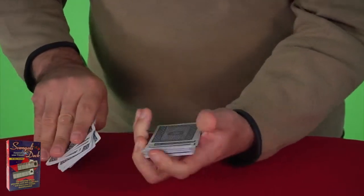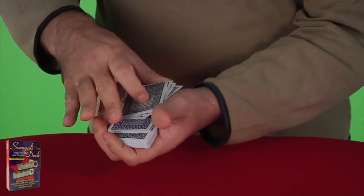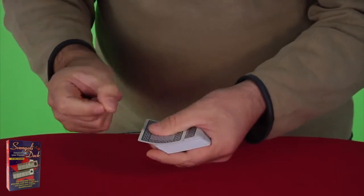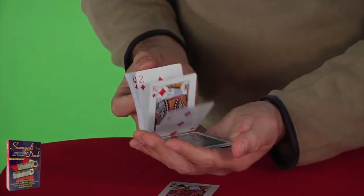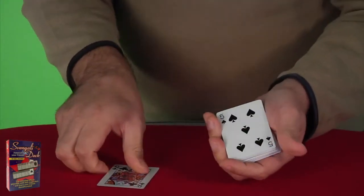Now the Queen goes back in the middle of the deck. All I have to do is snap my fingers and the Queen jumps to the top. That's weird. Naturally, it's disappeared from the center of the deck.